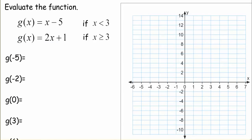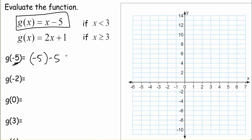So evaluating functions — the if statement we have is a constraint, meaning we have a couple different options. If our input is negative 5, which condition does it satisfy: x less than 3, or x greater than or equal to 3? Well, negative 5 is less than 3, so we use the first function and substitute in negative 5 for x. Negative 5 minus 5 is negative 10, so that's the point negative 5, negative 10.